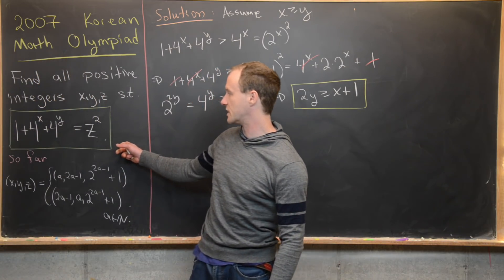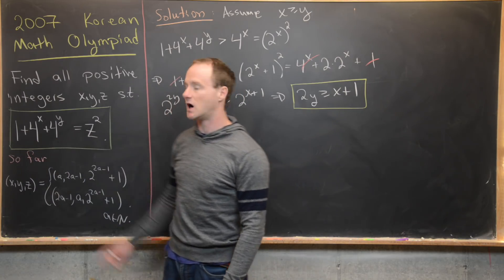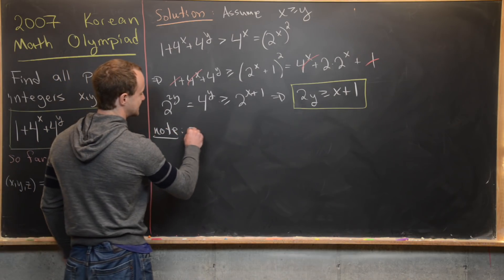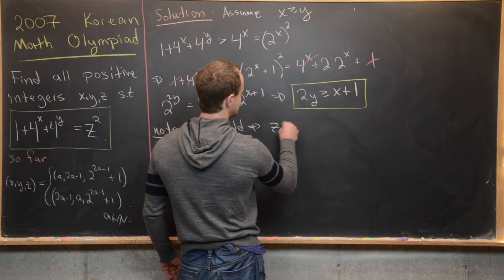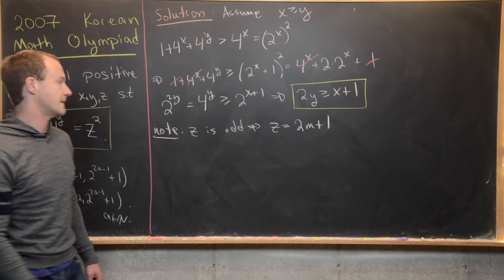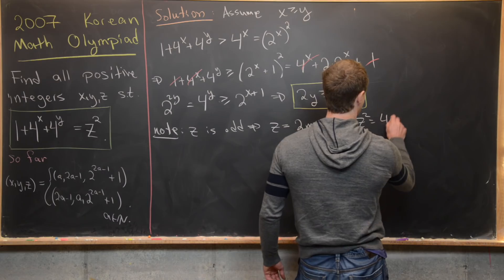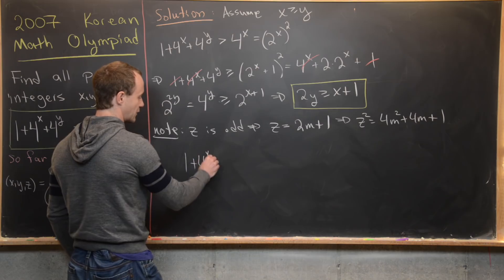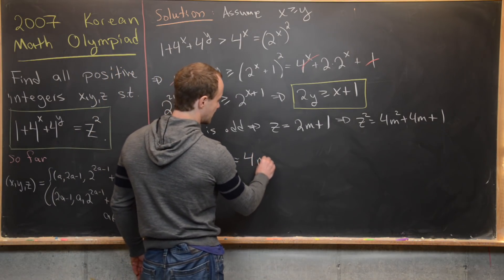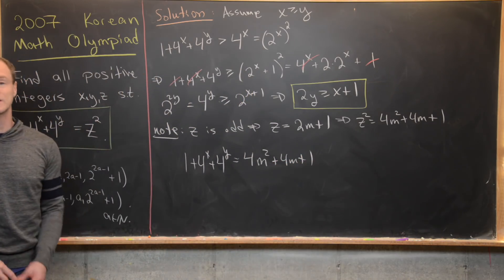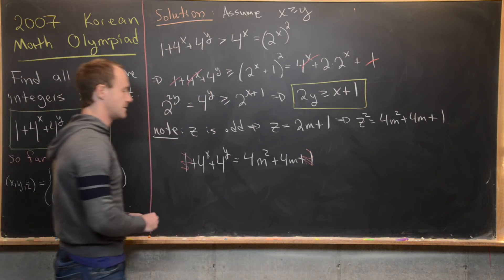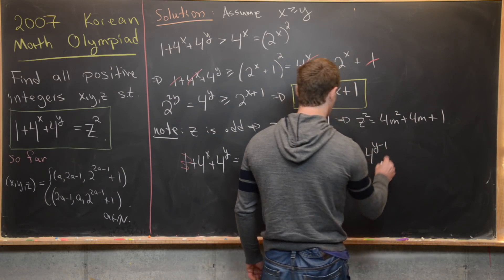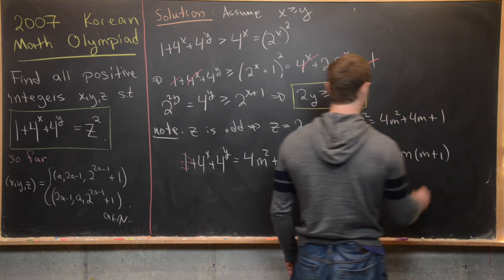Now approaching from the other side: the left hand side is definitely odd, making the right hand side odd, so z itself must be odd. We write z as 2m plus 1, so z squared equals 4m squared plus 4m plus 1. Substituting into our equation gives 1 plus 4 to the x plus 4 to the y equals 4m squared plus 4m plus 1. Canceling the 1s and factoring out 4 yields 4 to the x minus 1 plus 4 to the y minus 1 equals m times (m plus 1).